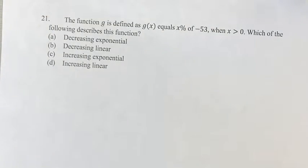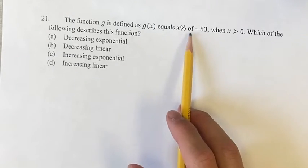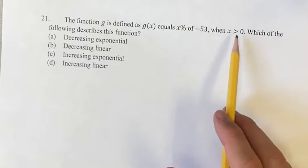Hello and welcome back to another video. In this problem we have the function g which is defined as g of x equals x% of negative 53 when x is greater than 0.